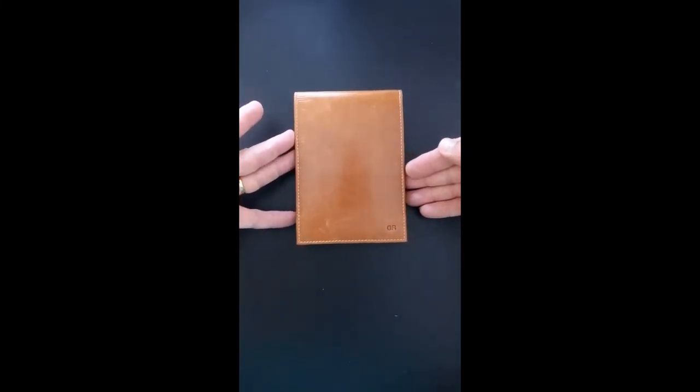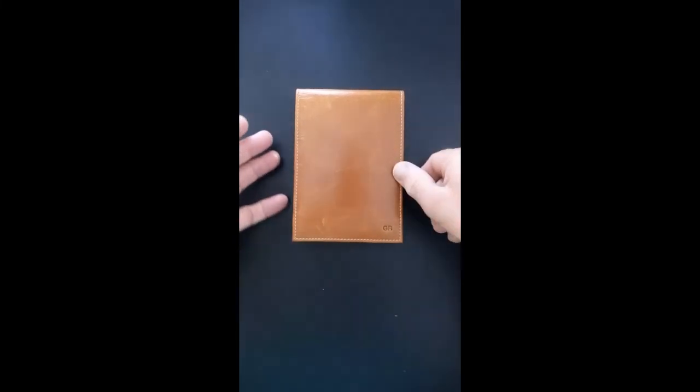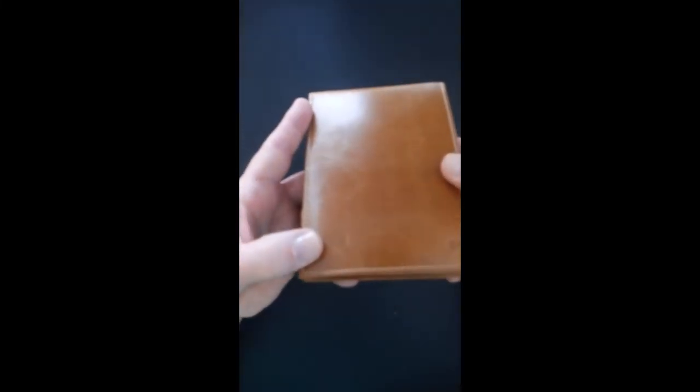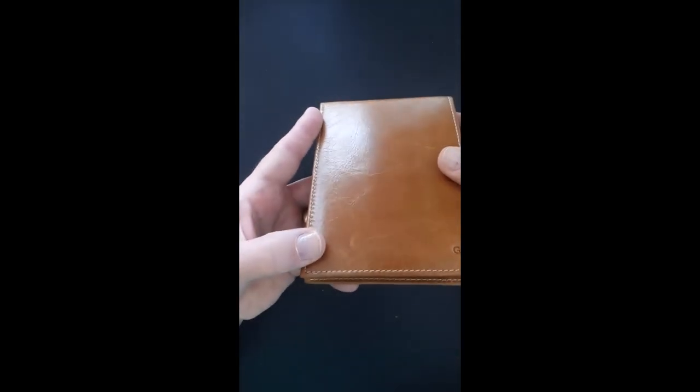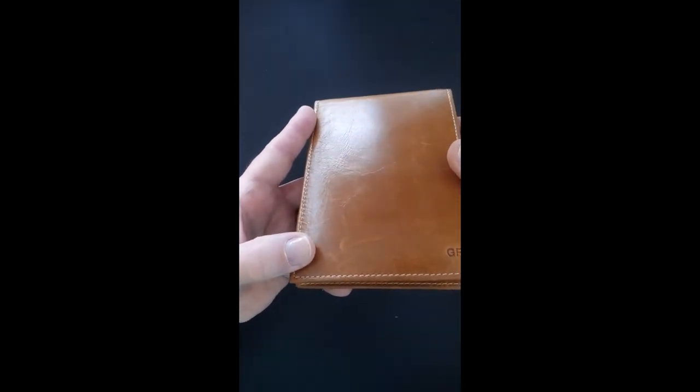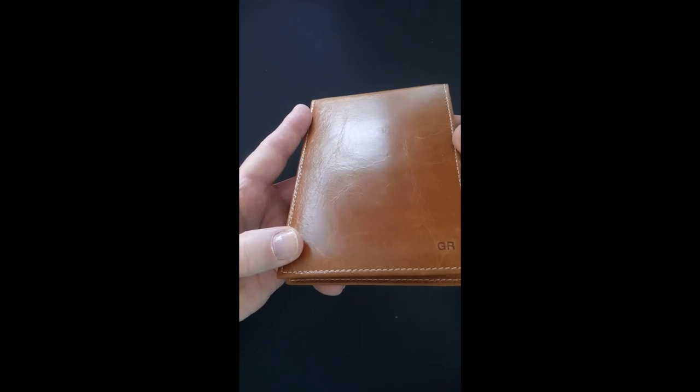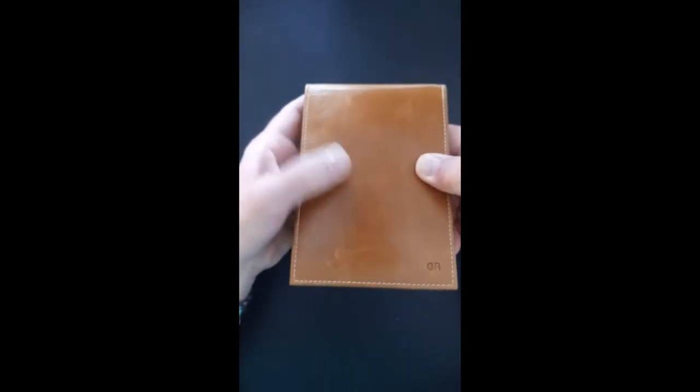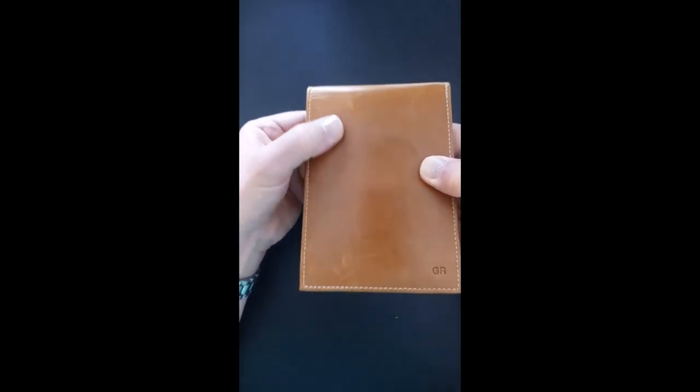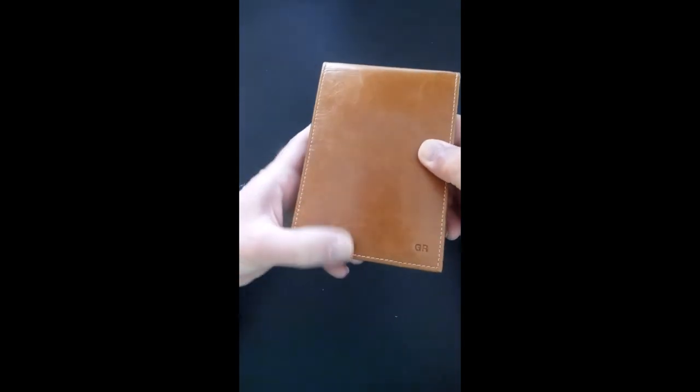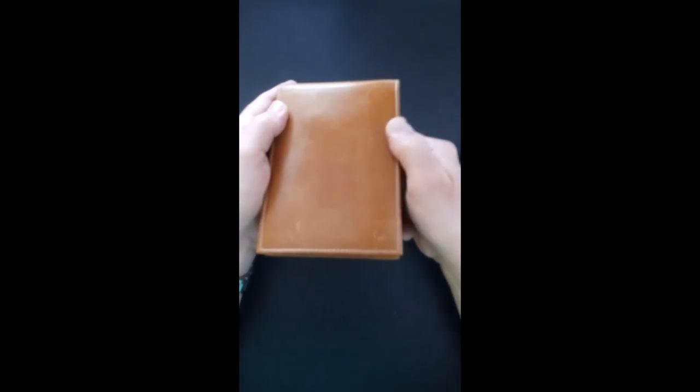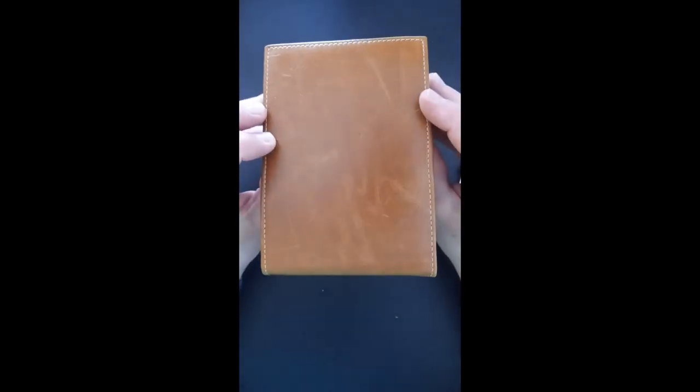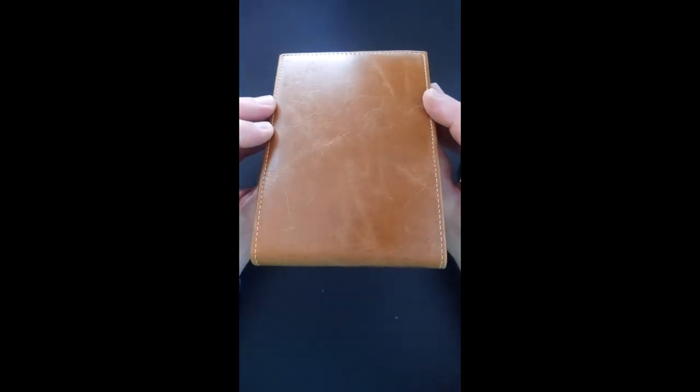So that's the Delmon Verone A6 reporter's notebook holder. I haven't used it a great deal yet, but you'll notice already that it's getting a little bit wrinkled. The surface is a little bit wrinkled, a little bit worn. I think it's because the leather is thin, which is why it's not hugely expensive and also very light.